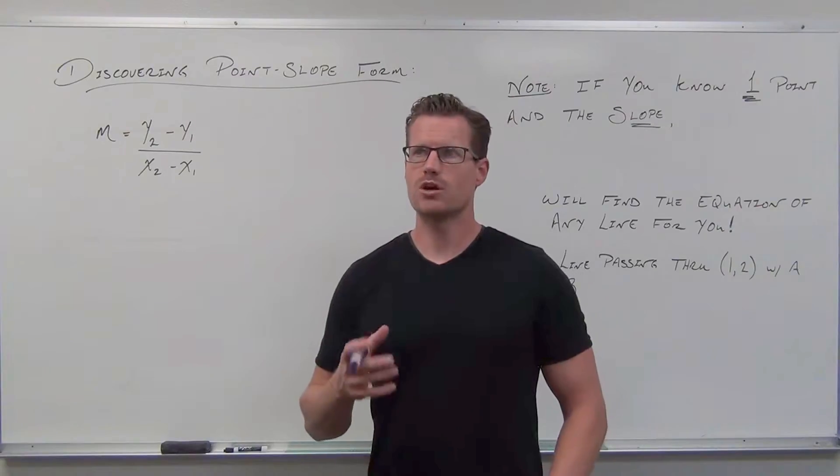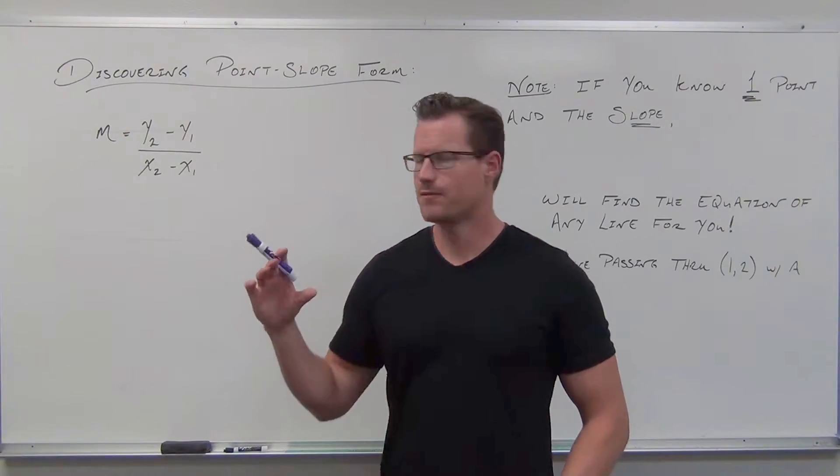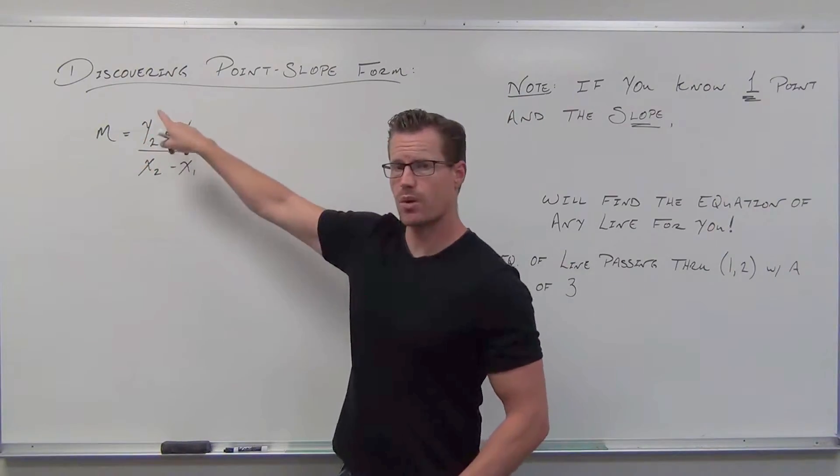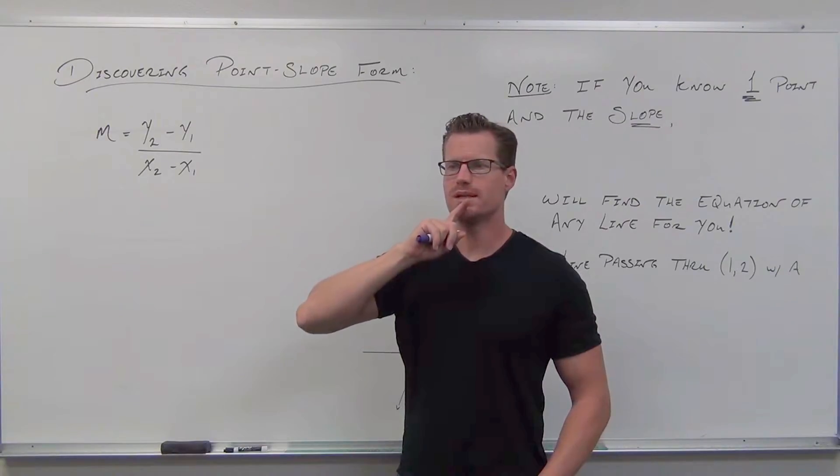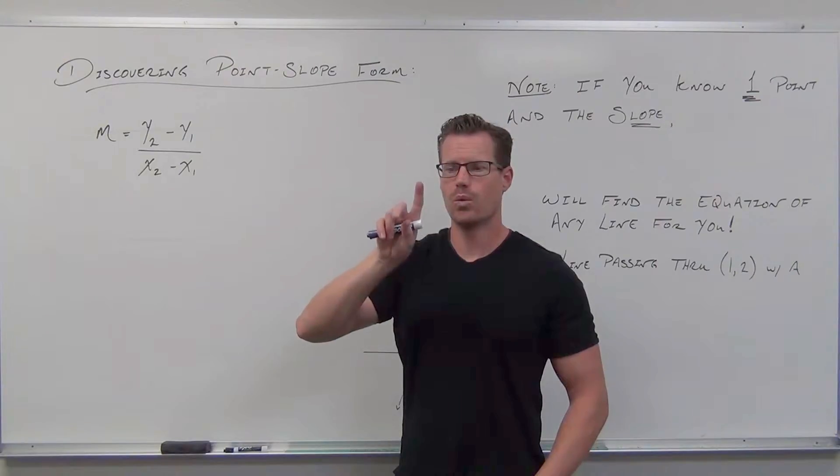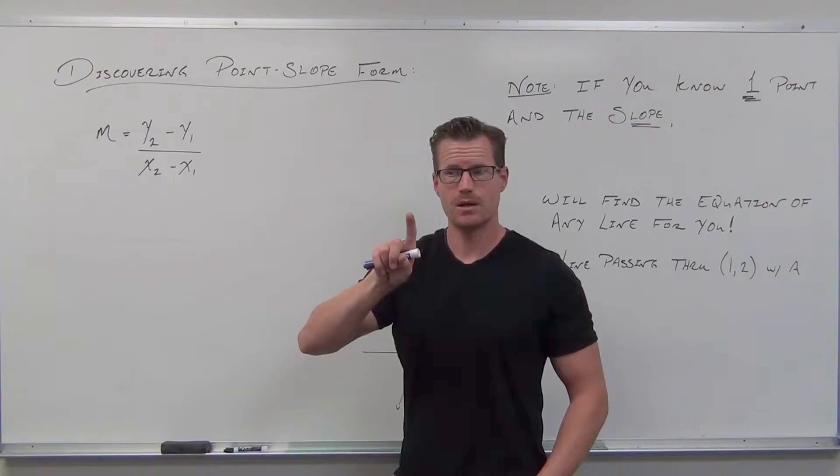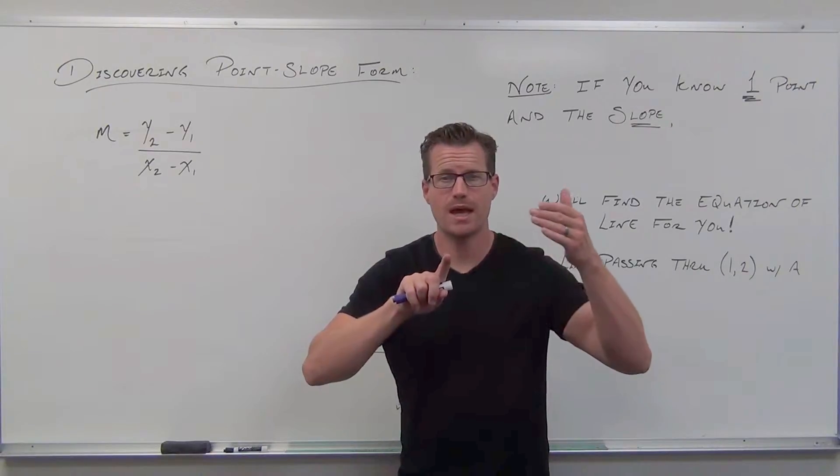What the point slope formula does, it says, the slope formula itself fixes two points, x1, y1, and x2, y2. What point slope says is, what if we didn't know two? What if we only knew one point, and we use the slope to find the other one?